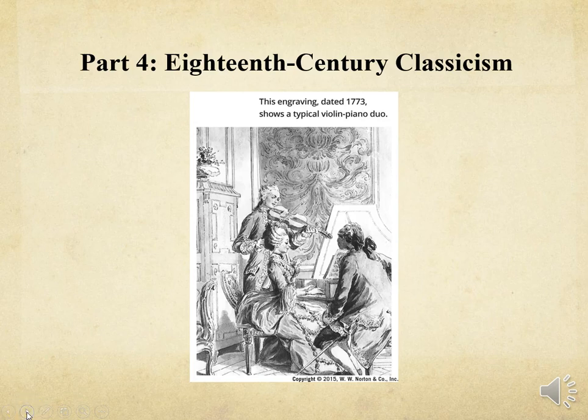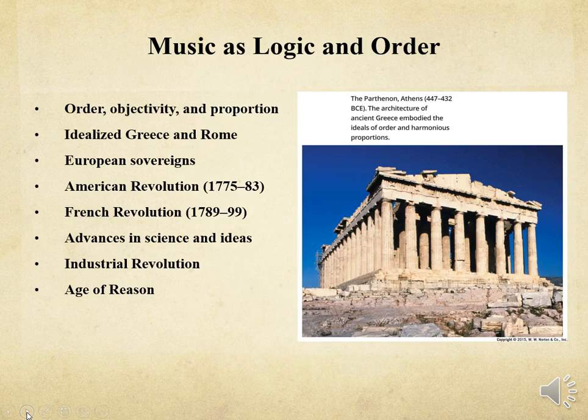Welcome to Part 4, Eighteenth-Century Classicism. In the classical era, order, reason, and serenity were used to express emotions in the different art forms. The classicists sought to emulate the qualities of order, stability, and harmonious proportion, which were found in the art and literature of ancient Greece and Rome.